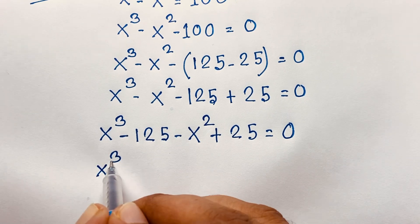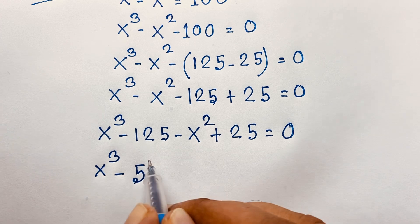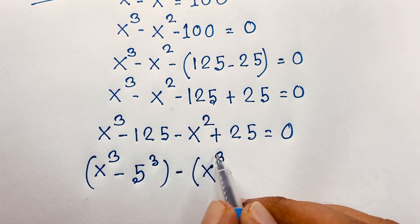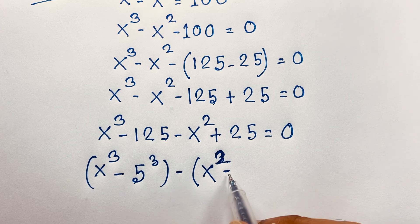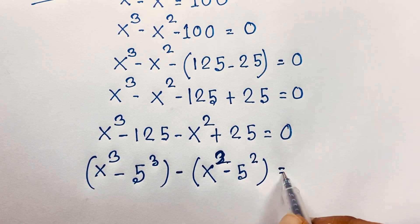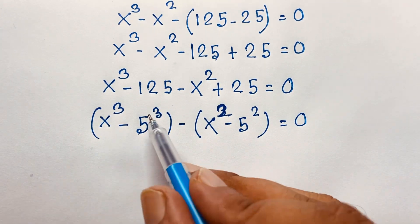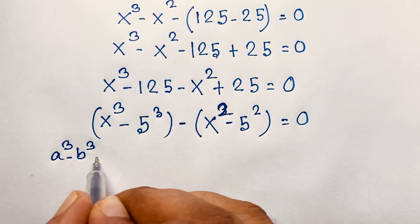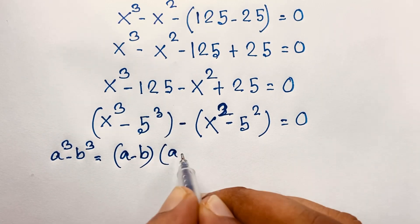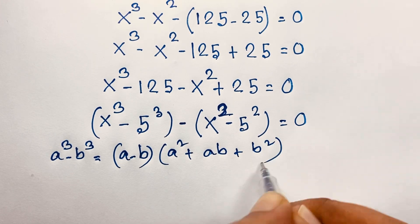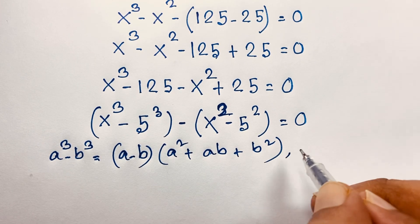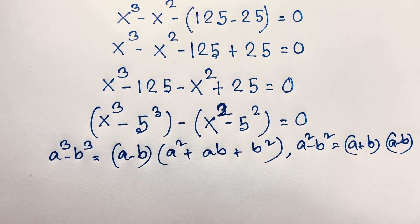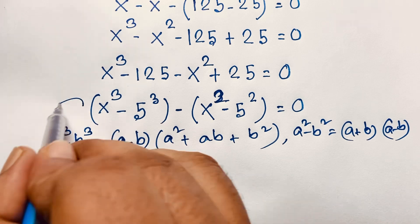Now x³ - 125 is a difference of cubes: a³ - b³, and x² - 25 is a difference of squares: a² - b². We know that a³ - b³ = (a - b)(a² + ab + b²), and a² - b² = (a + b)(a - b).